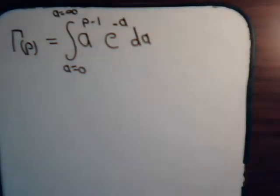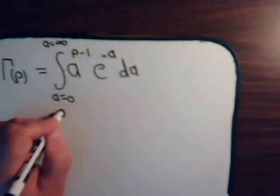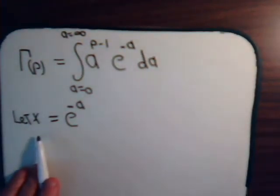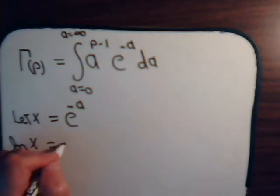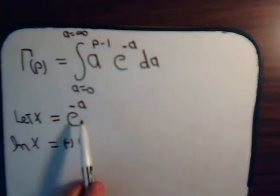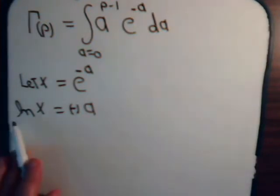So, here is our standard gamma function, and let's start off like this then. Let x equal e to the minus a. Then the natural log of x, ln of x, that's just minus a. The natural log, of course, is the number that e has to be raised to to get that number. Or we could say that a is minus the natural log of x.